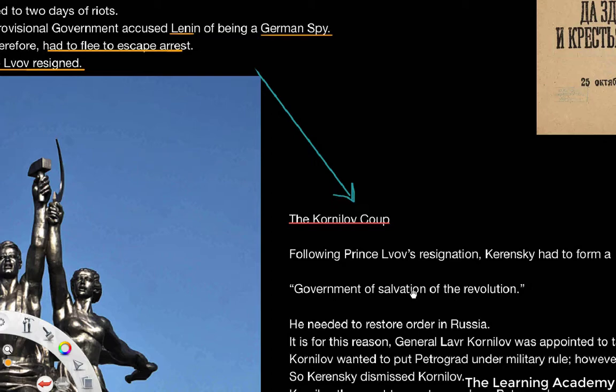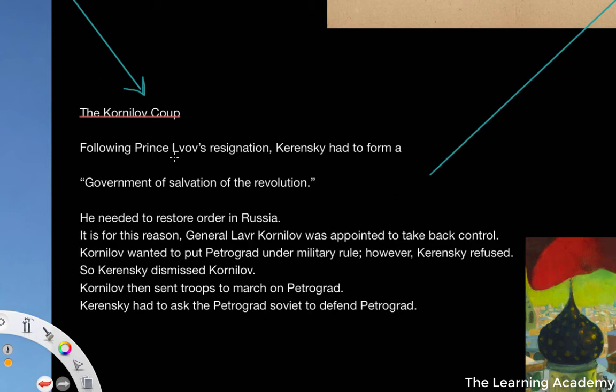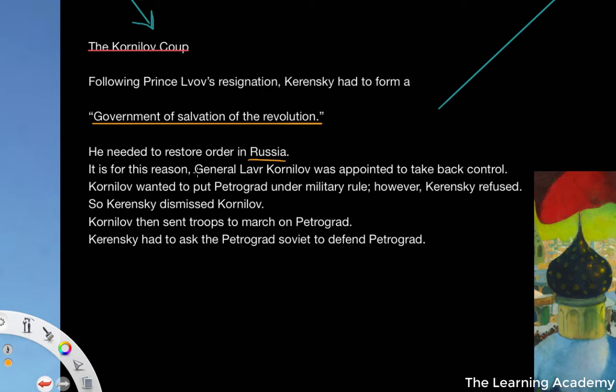Following the resignation of Prince Lvov, Kerensky had to form what was called a 'government of salvation of the revolution' in place of the very quickly crumbling Provisional Government. He needed to restore order in Russia, and for this reason General Lavr Kornilov was appointed to take back control — to try and salvage the Provisional Government and restore peace and order within the state.